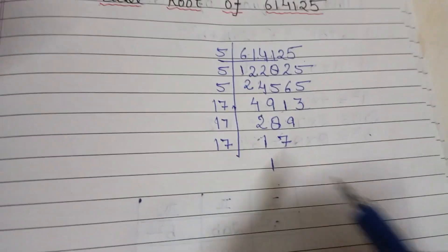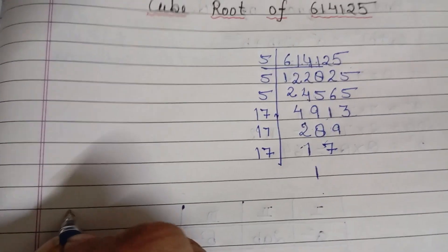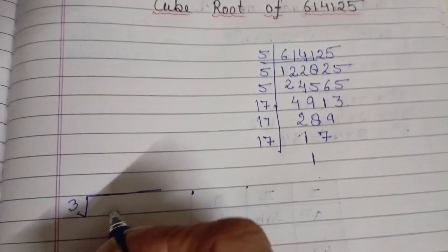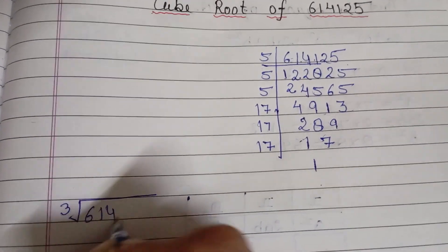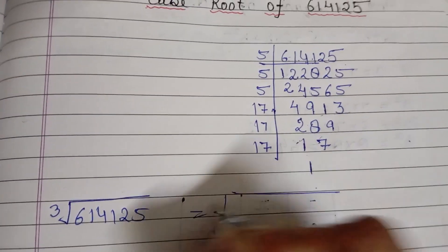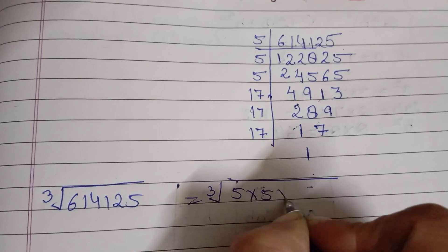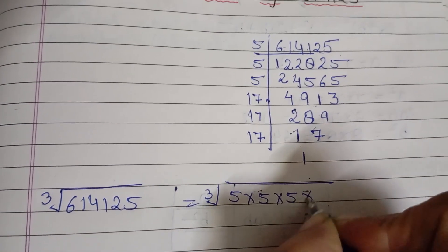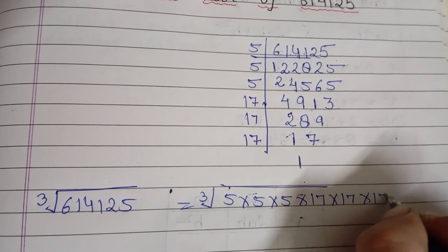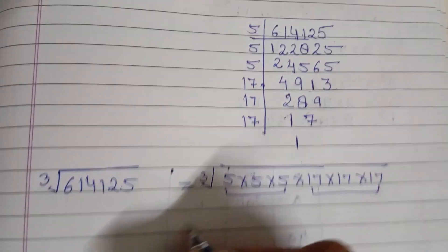So now we have found the factors of this number. Now write it under the cube root: 614125. We will make groups of 3. We have 5, 5, 5 — that is one group; and 17, 17, 17 — that is another group. So we make 3 groups of 3 for the cube root.